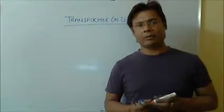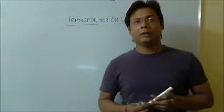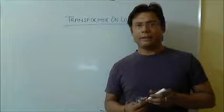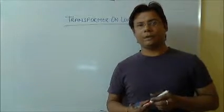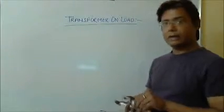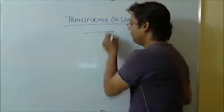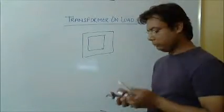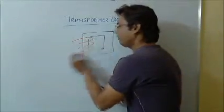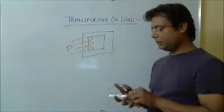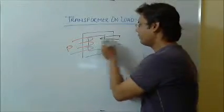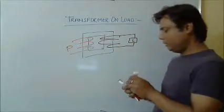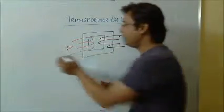When the transformer is loaded, due to E2 which is getting generated in the secondary, the current I2 starts going in the secondary. This is the core, this is the primary winding, and this is the secondary winding which is connected to the load. The primary part is connected to the supply.